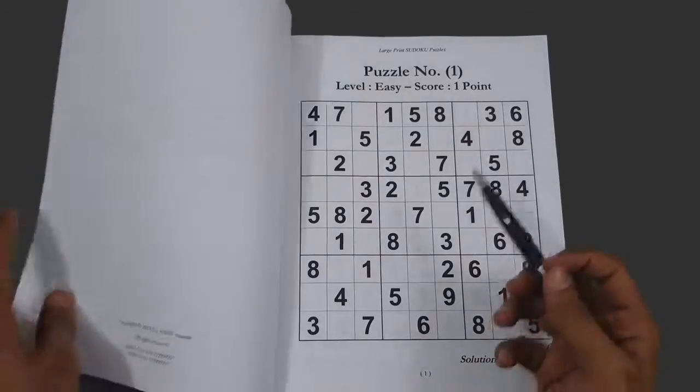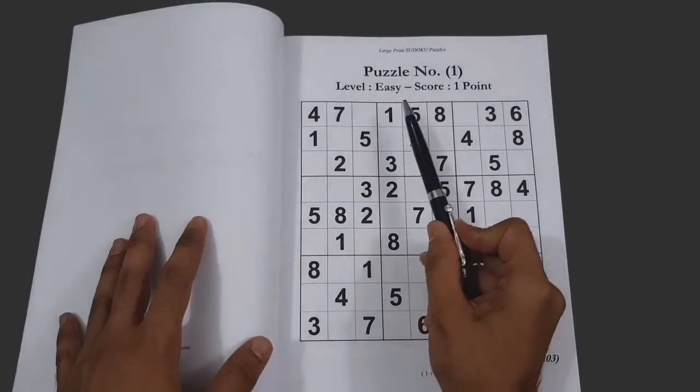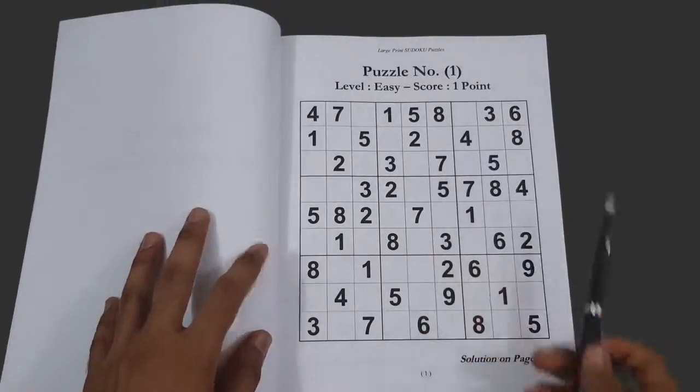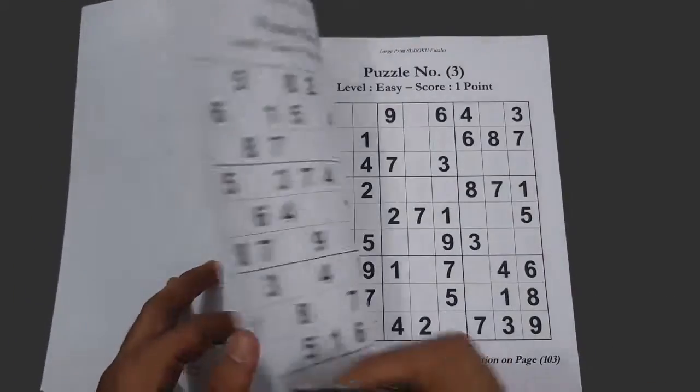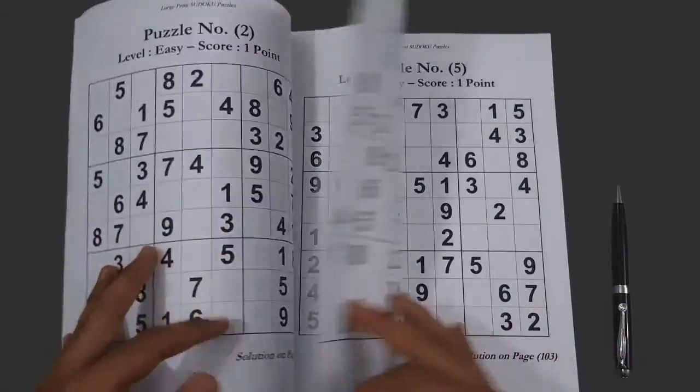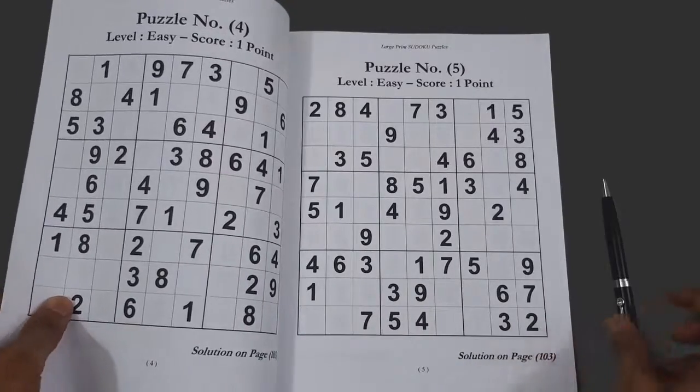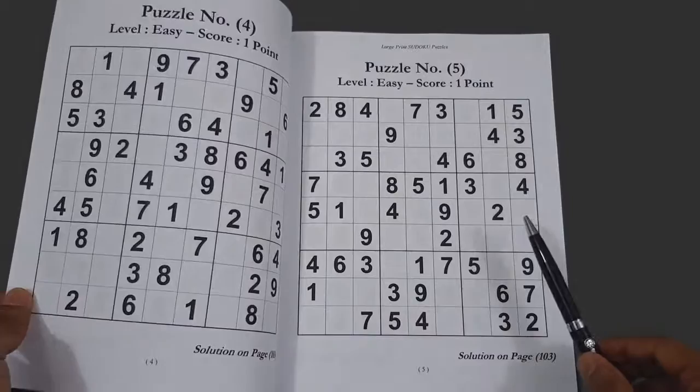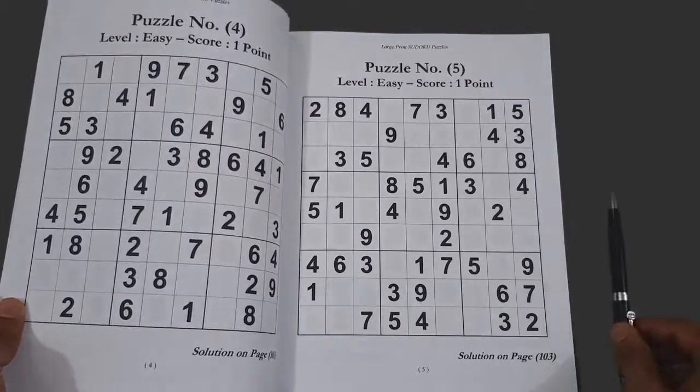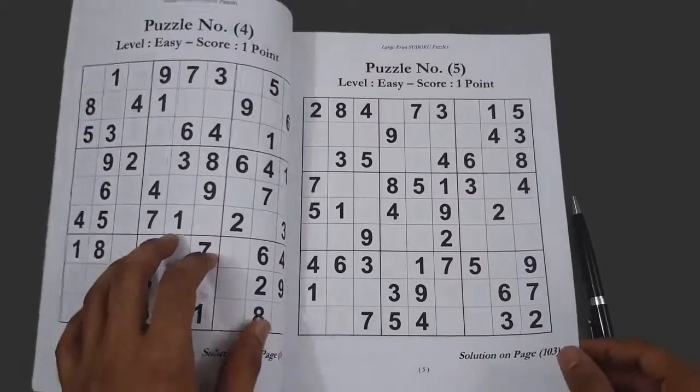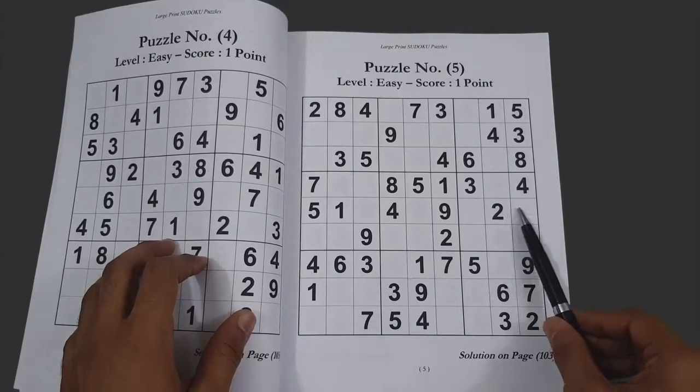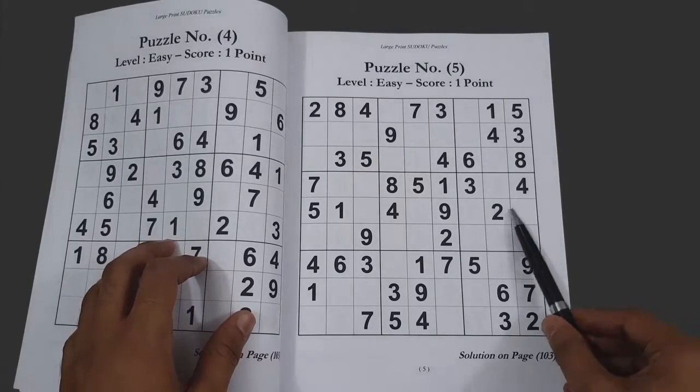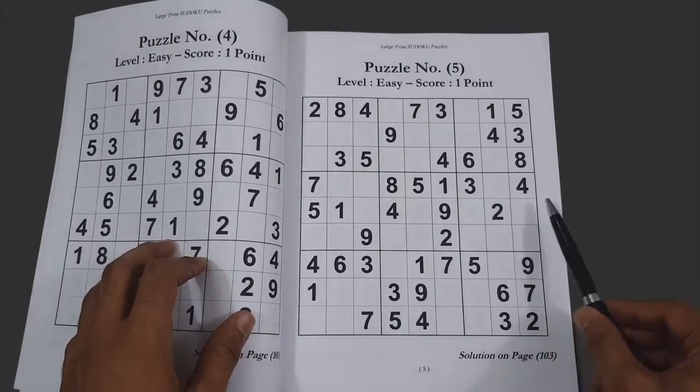You start with the puzzles with easy difficulty and a score of one point. You can immediately notice the larger print size, which has mainly two benefits. Number one is that it is easier to see for older people and younger people as well. And number two is that there is more room for you to write different possibilities on the numbers that should go in a certain box.